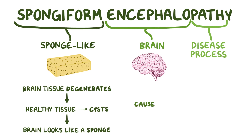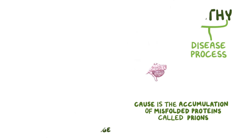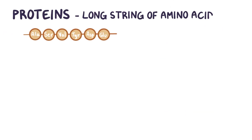The underlying cause of spongiform encephalopathy is the accumulation of misfolded proteins called prions. Proteins are made up of a long string of amino acids, and the exact sequence of these amino acids is called the primary structure.